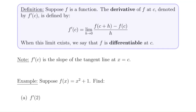Here is the formal definition. Suppose f is a function. The derivative of f at c, denoted f'(c), is defined as the limit as h → 0 of [f(c + h) − f(c)] / h. The expression f(c + h) − f(c) all over h is called the difference quotient — a difference because of the subtraction in the numerator, a quotient because we're dividing. When this limit exists, we say that f is differentiable at c.